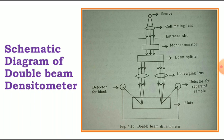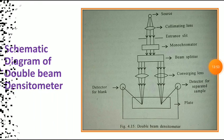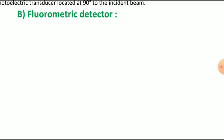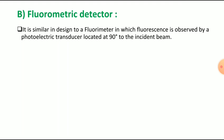Now the second part from detection and visualization is the fluorometric detector, which we are going to see next. This type of detector is used for detection of separated components on the TLC plate. It is similar in design to a fluorimeter, in which fluorescence is observed by a photoelectric transducer located at 90 degrees to the incident beam. A vapor lamp or xenon lamp is used as the radiation source.